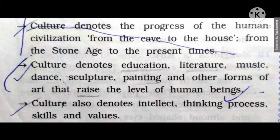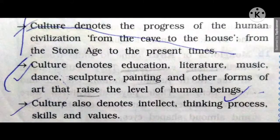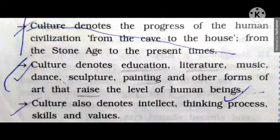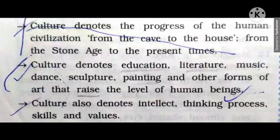Number five: Culture denotes education, literature, music, dance, sculpture, painting and other forms of art that trace the level of human beings. Culture ये भी हमें बताता है — education यानि बढ़ाई, literature यानि जो भी चीज़ें हम पढ़ सकते हैं, music यानि संगीत, dance यानि नृत्य, sculpture यानि मूर्तियां-प्रतिमाएं, painting जो paint की जाती है, और दूसरे अलग-अलग art के साधन। इन सब चीज़ों को इस्तिमाल करने से हमारी जिंदगी जीने का level और भी ऊंचा हो जाता है — एक अच्छे, systematically तरीके से हम रहने लगते हैं।